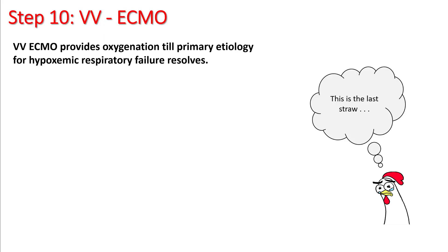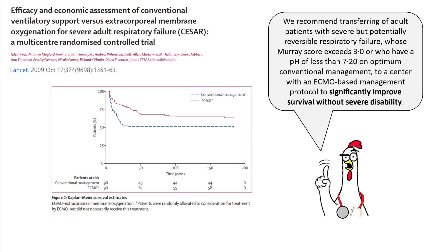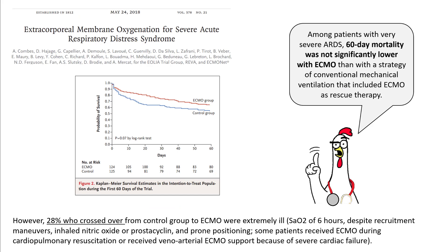Finally, if nothing works, VV ECMO is the last resort. VV ECMO provides oxygenation until the primary etiology for hypoxemic respiratory failure resolves, so it is imperative to understand the underlying problem. Two randomized controlled trials have been done. The CESAR trial in 2009 showed significant improvement in survival. However, the subsequent EOLIA trial was unable to show any difference in mortality between ECMO and the control group, although the study design was somewhat flawed as 28% of patients crossed over from the control group to ECMO and were much more severe cases presenting later in the disease process.